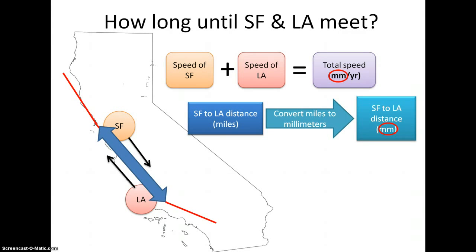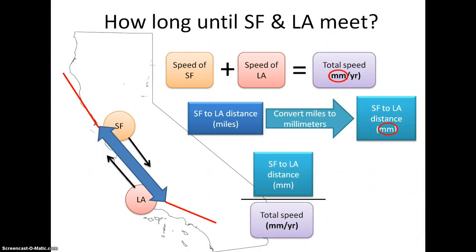We're nearly there. We next need to take the distance and divide it by the speed. The distance units cancel out, leaving only years, which moves the denominator up to the numerator, giving us the number of years until the two cities meet. This is a good point to do a reality check, something that you should do whenever you make a big calculation. Does your result make sense? Your answer should be several million years.